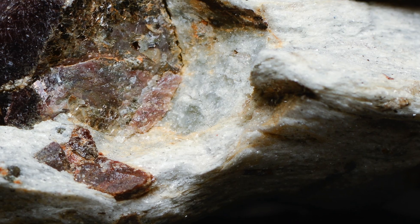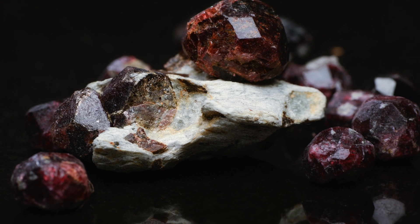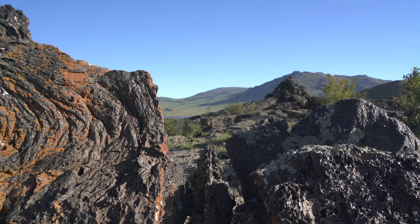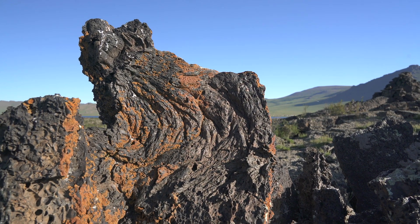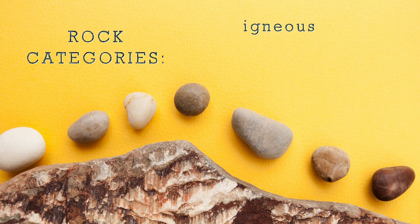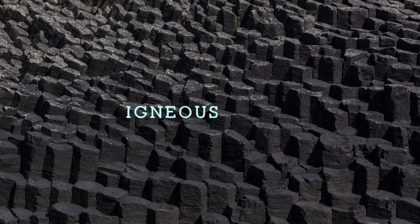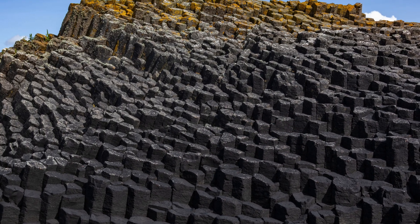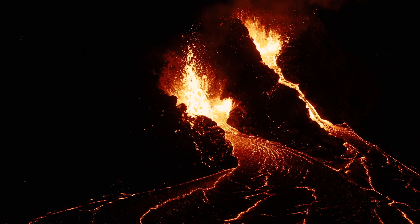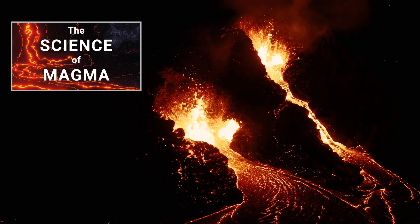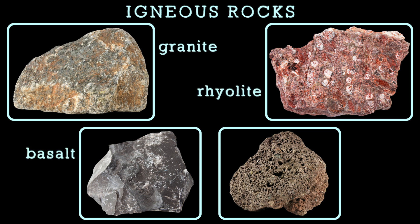We'll start with rocks. A rock is a solid natural material composed of one or more minerals. Depending on where and how the rocks were formed, as well as their mineral composition, we can classify rocks into three main categories: igneous rocks, sedimentary rocks, and metamorphic rocks. Igneous rocks are formed either from solidified magma or lava. To learn more about magma and the difference between magma and lava, check out this other video where I explain the science of magma. Some examples of igneous rocks include granite, basalt, rhyolite, and scoria.